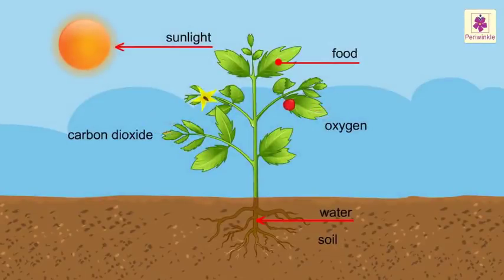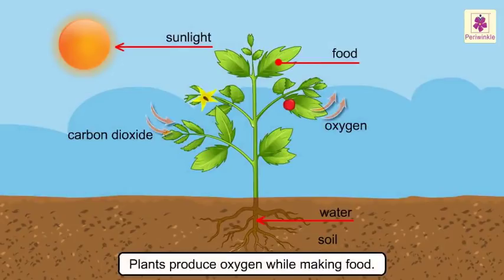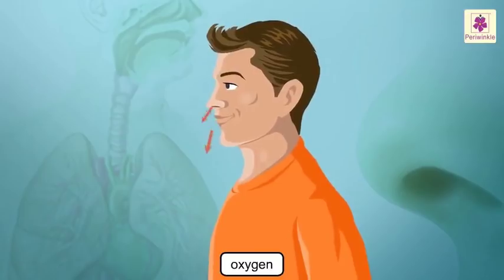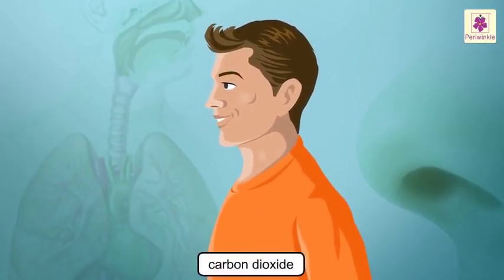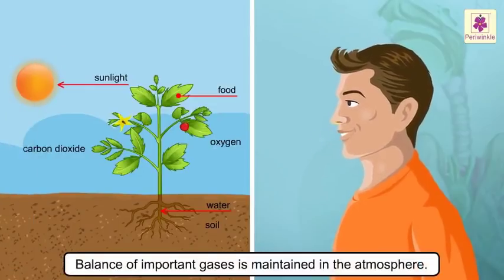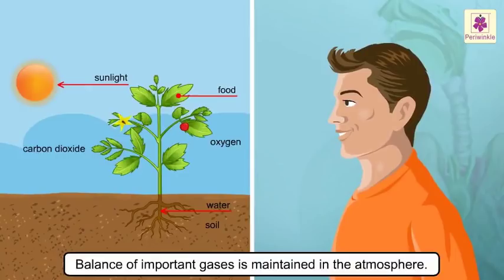One of the reasons why plants are so important to us is because they produce oxygen while making food. We breathe in oxygen and breathe out carbon dioxide. So, the balance of important gases is maintained in the atmosphere.